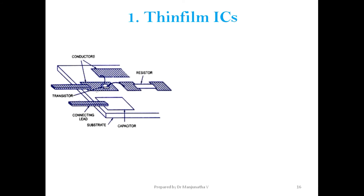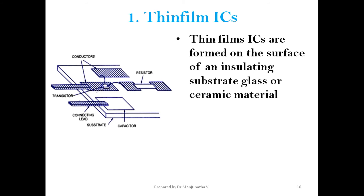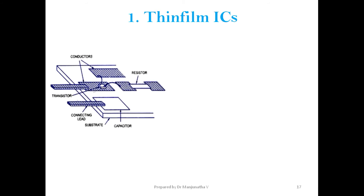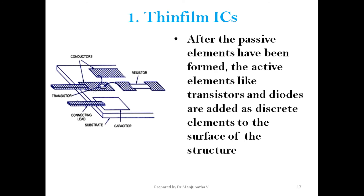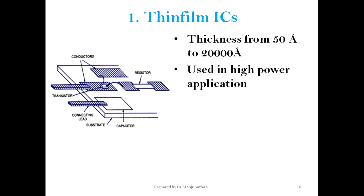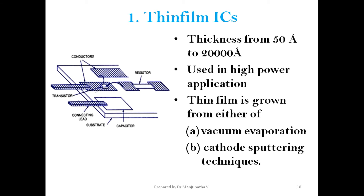Thin film ICs are formed on the surface of an insulating substrate such as glass or ceramic material, on which only passive elements like resistors and capacitors are formed through thin film technique. Afterwards, active elements like transistors and diodes are added as discrete elements to the surface of the structure. The thickness of this structure is about 50 to 20,000 angstroms. These ICs are used in high-power applications, and the films are grown using vacuum evaporation technique.